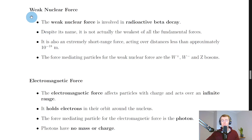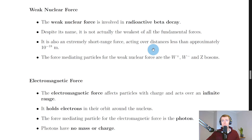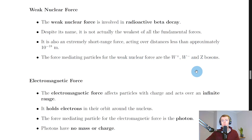Our next fundamental force is the weak nuclear force. The weak nuclear force is involved in radioactive beta decay. Despite its name it is not actually the weakest of all the fundamental forces — that's the gravitational force. It is also an extremely short-range force, acting over distances less than approximately 10 to the minus 18 metres. The force mediating particles for the weak nuclear force are the W plus, W minus, and Z bosons. A good way to remember this is the letter W for weak and W for the W bosons.